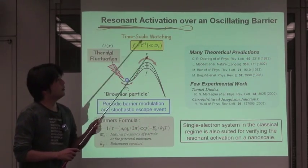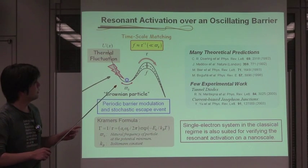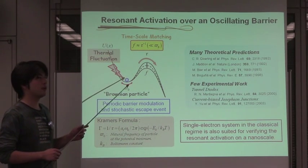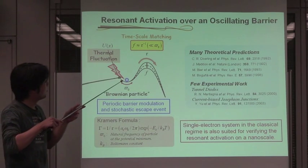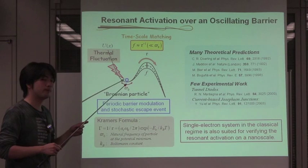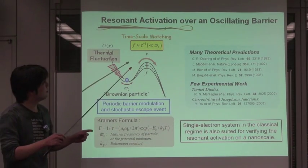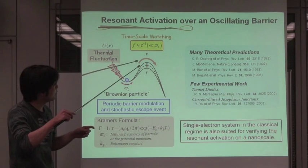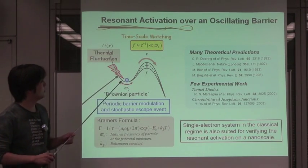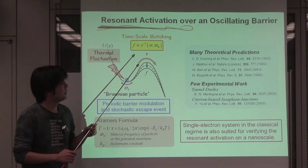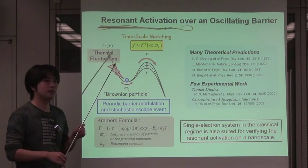According to a large number of theoretical work, this resonant phenomenon can be investigated even by dealing with monostable potential. If the particle escape is assisted by the thermal fluctuation, the escape rate can be described by the Kramers formula shown here. When the potential barrier itself is periodically oscillating on the time scale characteristic of the stochastic escape event, the stochastic resonance activation can occur, shortening the average escape time.